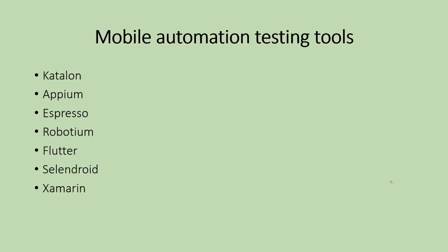For web automation, you need to use a programming language and tools. The most common tools used in mobile app automation are Katalon, Appium, Espresso, Robotium, Flutter, Cypress, and Xamarin. These are some of the number of tools available for our projects.